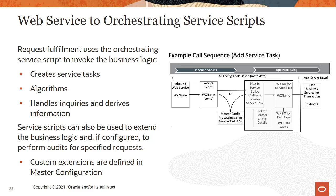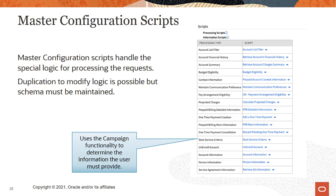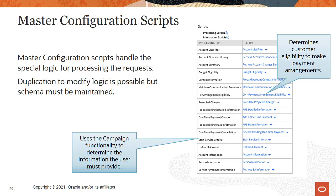Custom extensions are defined in C2M master configuration. Master configuration scripts handle the special logic for processing the requests. Duplication to modify logic is possible, but schema must be maintained. An example of this is using the campaign functionality to determine the information the user must provide to start their service online, such as social security number or driver's license number. The CM payment arrangement eligibility script determines what conditions must be met for a customer to be eligible to enroll in payment arrangements.